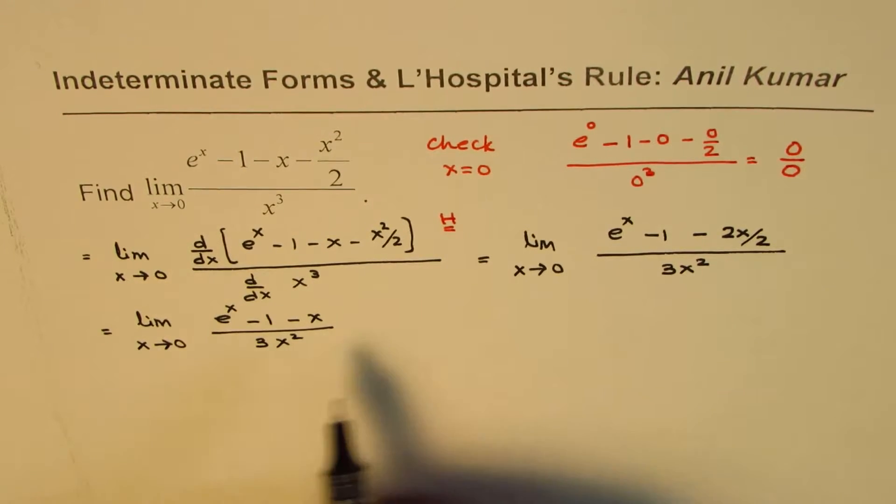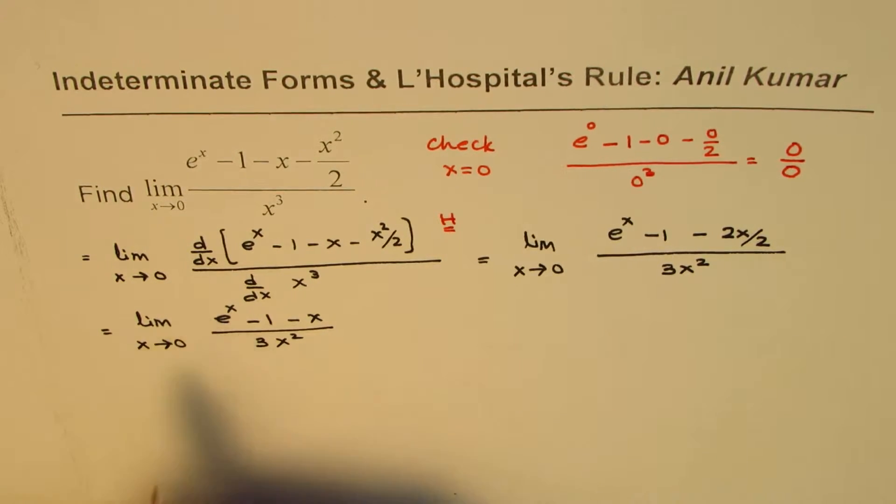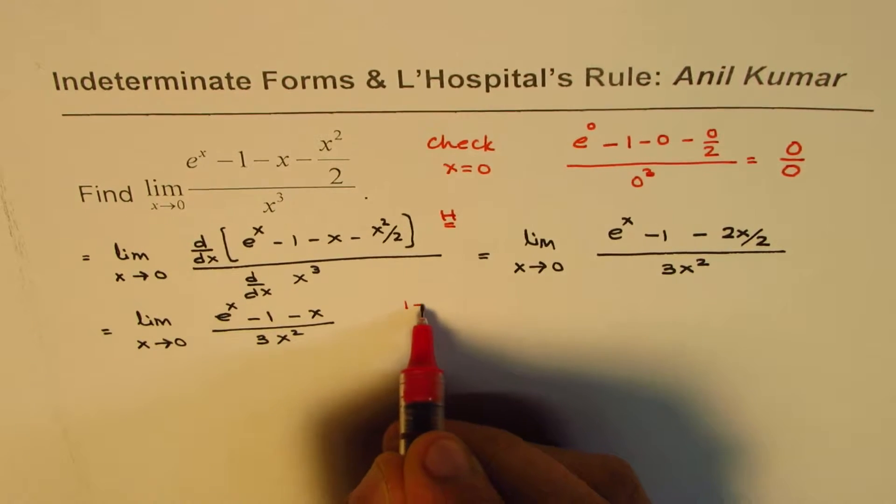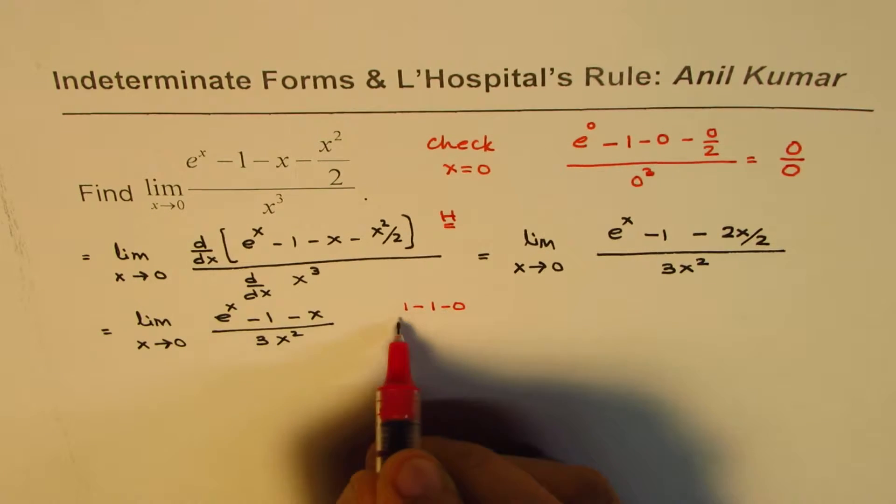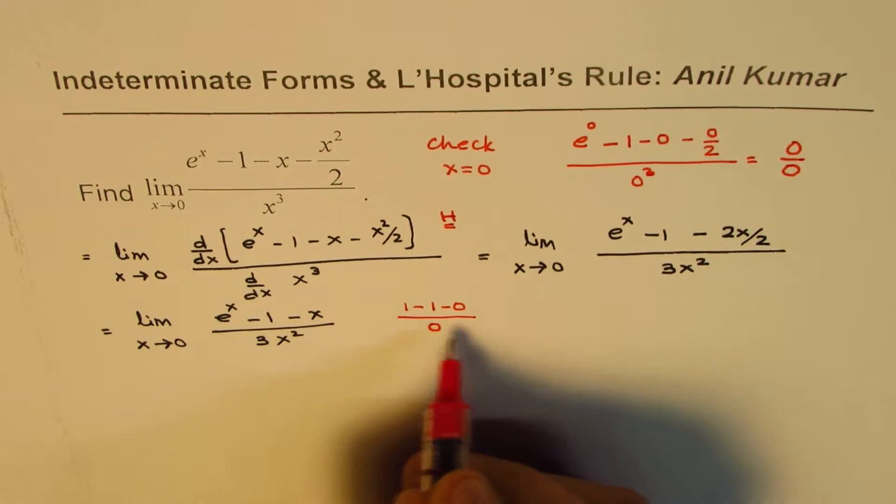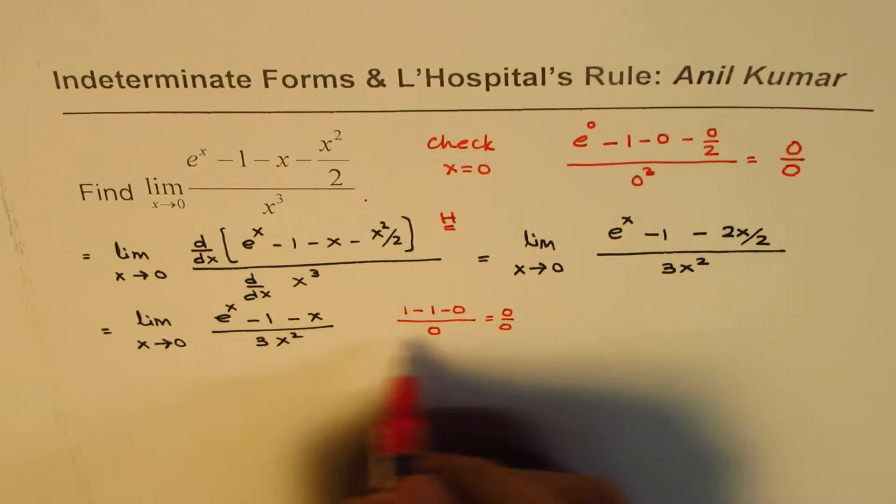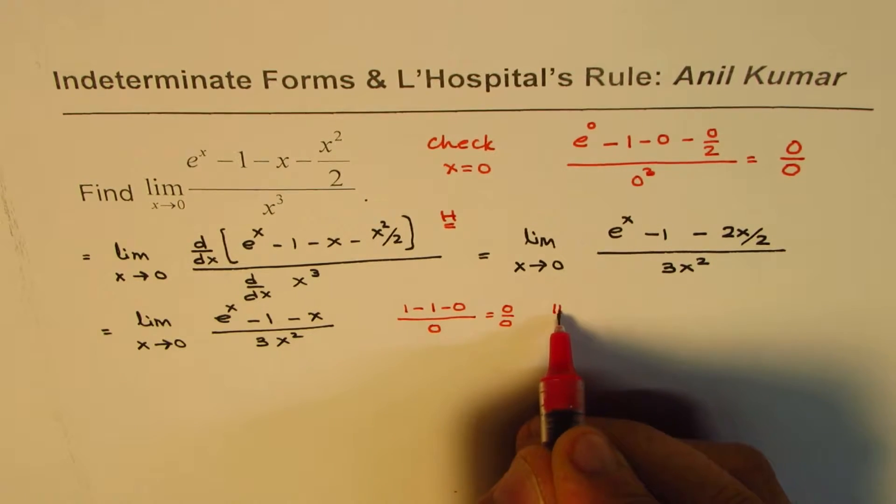At this stage, let us again check if the rule can be applied the second time. So to check, we'll substitute 0 here. So if I substitute 0, I get 1 minus 1, and that is minus 0, divided by 0. And this is indeed 0 over 0. So that means I can again apply L'Hospital's rule.